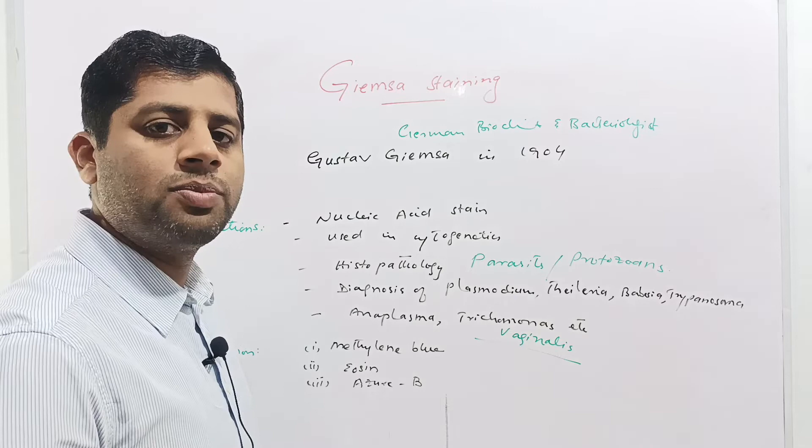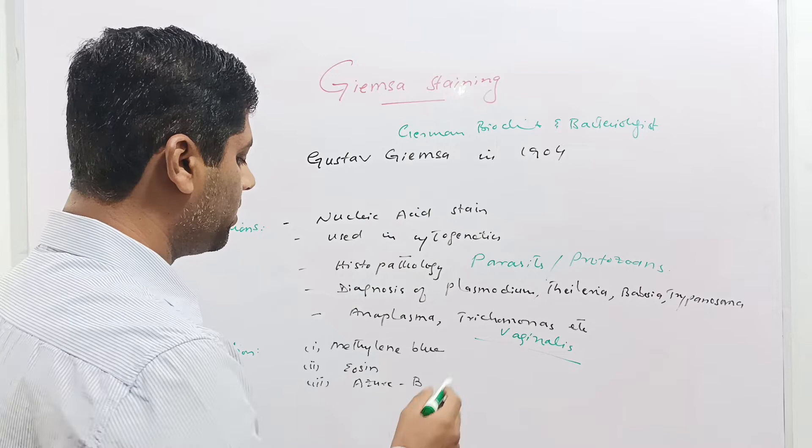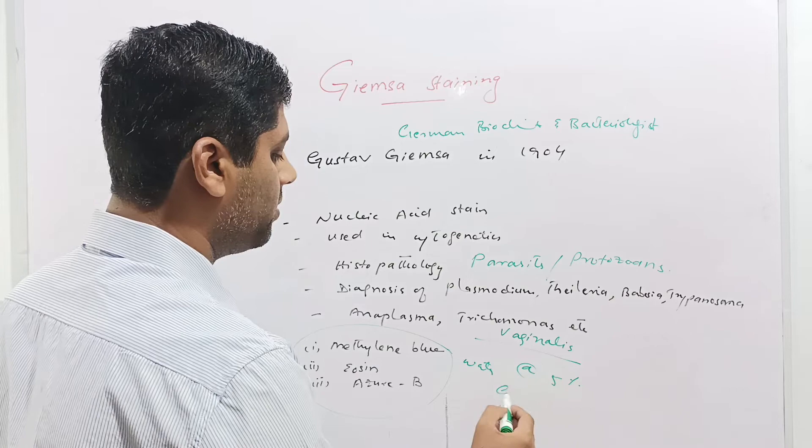The Giemsa stain is composed of three chemicals: methylene blue, eosin, and azure B. The combination of these three chemicals dissolved in water at the rate of 5% Giemsa solution is prepared for the microscopic examination of the parasites.